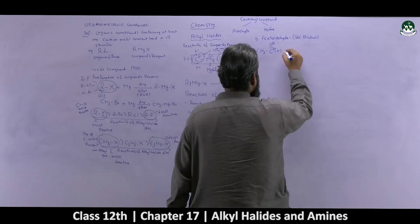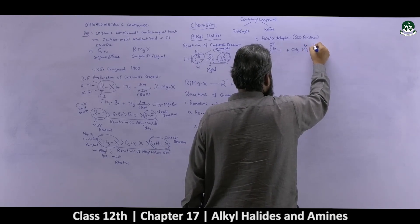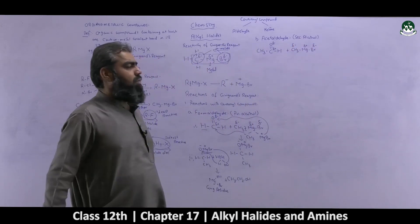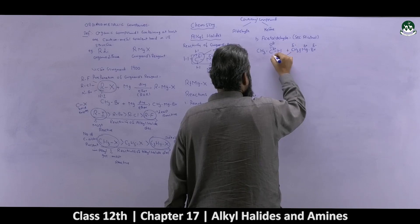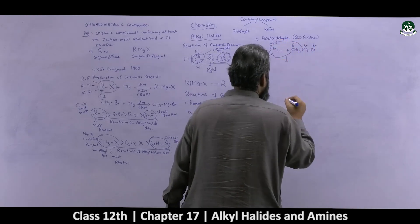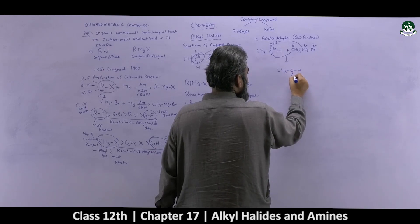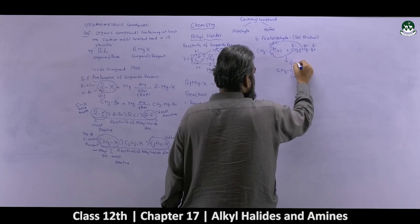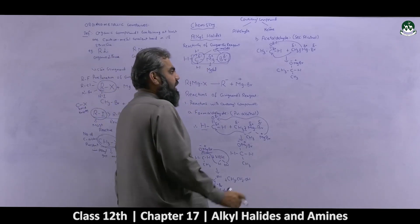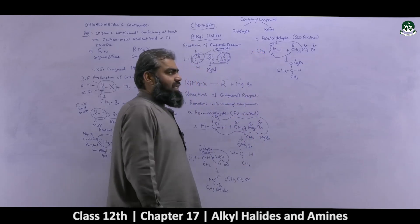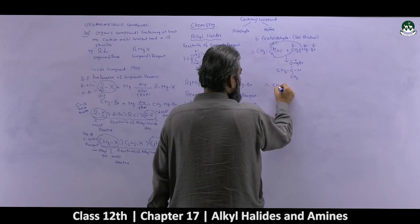Combining acetaldehyde with CH₃-Mg-Br: the first step has bond cleavage — CH₃ attaches to the carbonyl carbon and MgBr attaches to the oxygen. The intermediate produced is CH₃-CH(-CH₃)-O⁻-MgBr. After intermediate production, in step two, like we did previously, hydrolysis is carried out, and it results in the formation of a secondary alcohol.